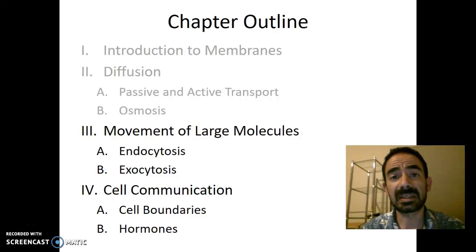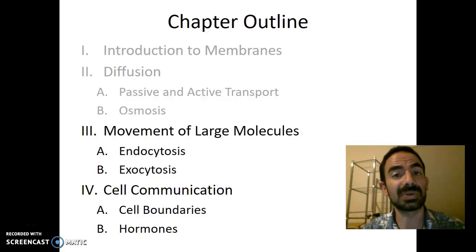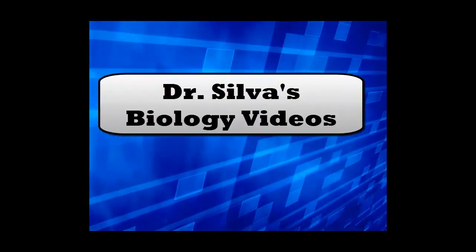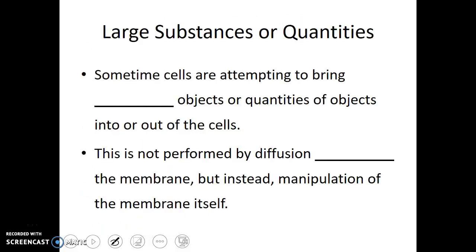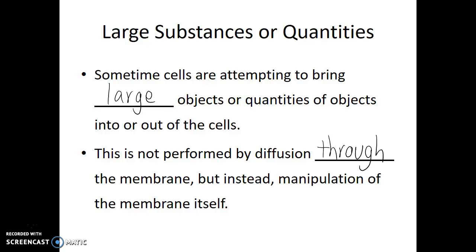Now that we have learned about osmosis and diffusion, and how that relates to both active and passive transport, we should discuss the movement of large objects and large amounts of objects into and out of the cell. The movement of large objects into or out of the cell is not performed by diffusion through the membrane, but instead by manipulation of the membrane itself.